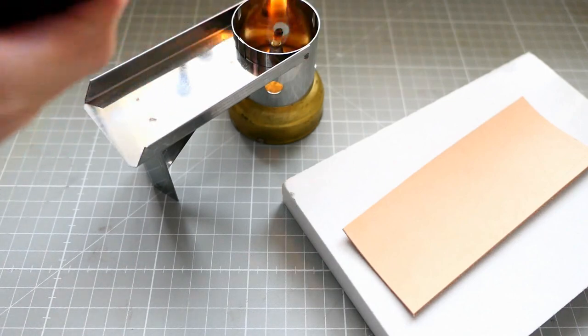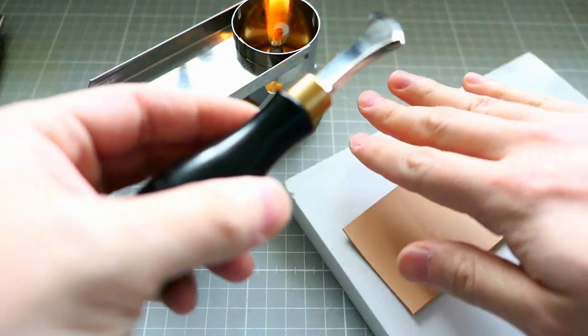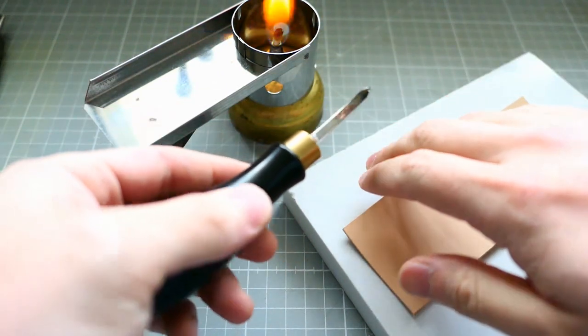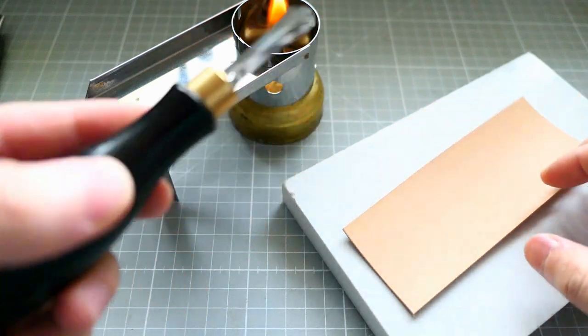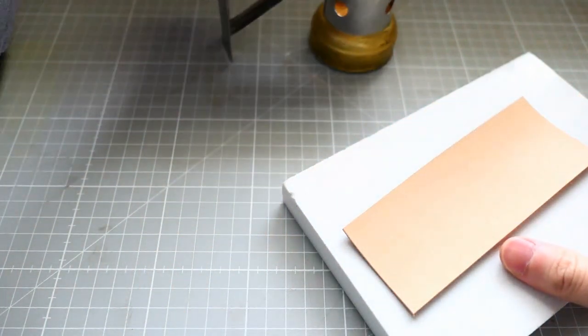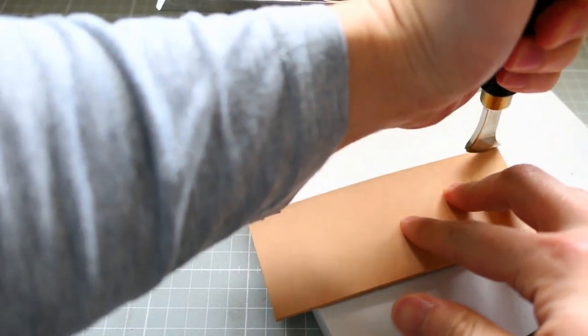How you normally do is you can actually get it close to your hands, but be careful, you might burn yourself. And you can feel the heat really. And you'll feel, okay, this is hot enough, and then you will make a creaser line like this.